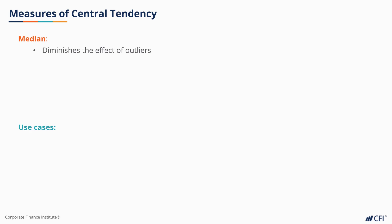Median is useful when we want to diminish the effect of outliers. Imagine a scenario where you are studying the salaries of several companies. If we include owners or high-paid executives, that might skew our measure significantly if we apply an average. Using the median diminishes the influence of top earners and gives us a more realistic sense of the salaries of typical workers in that company. Alternatively, when looking at the distribution of S&P 500 daily returns, there are frequently quite a few outliers.